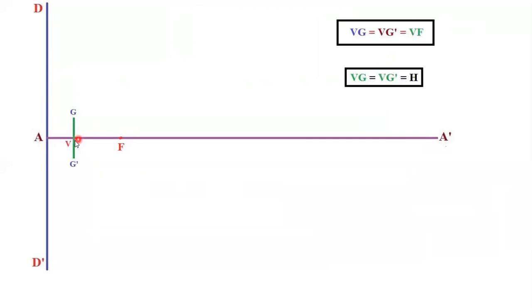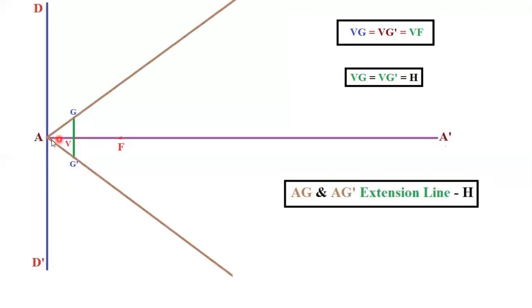Next step is, whatever distance you measure between V and F, just measure VF, you will be having 20mm. Mark your vertical line upward as well as downwards and name it as G and G', so VG is equal to VG' is equal to VF, 20mm. Next step is, you need to join A and G and try to extend that line, and join A, G' and extend the line to some extent.